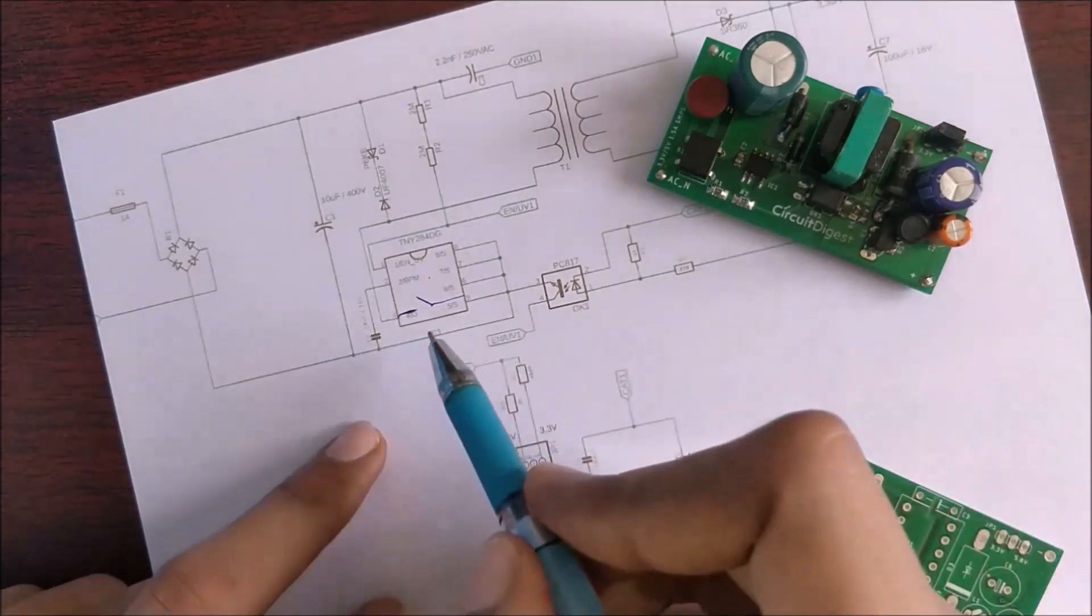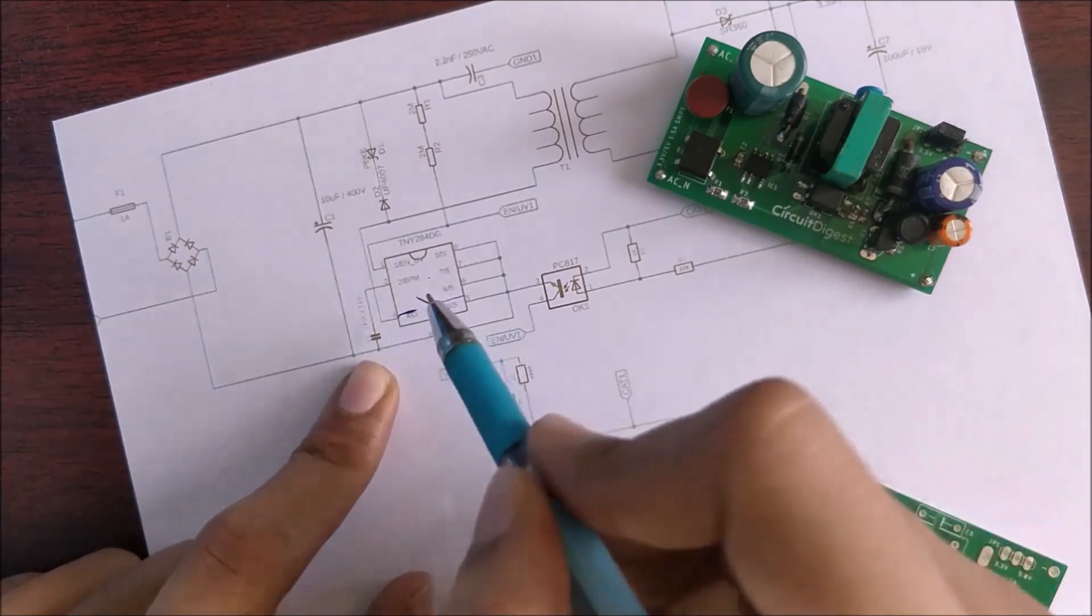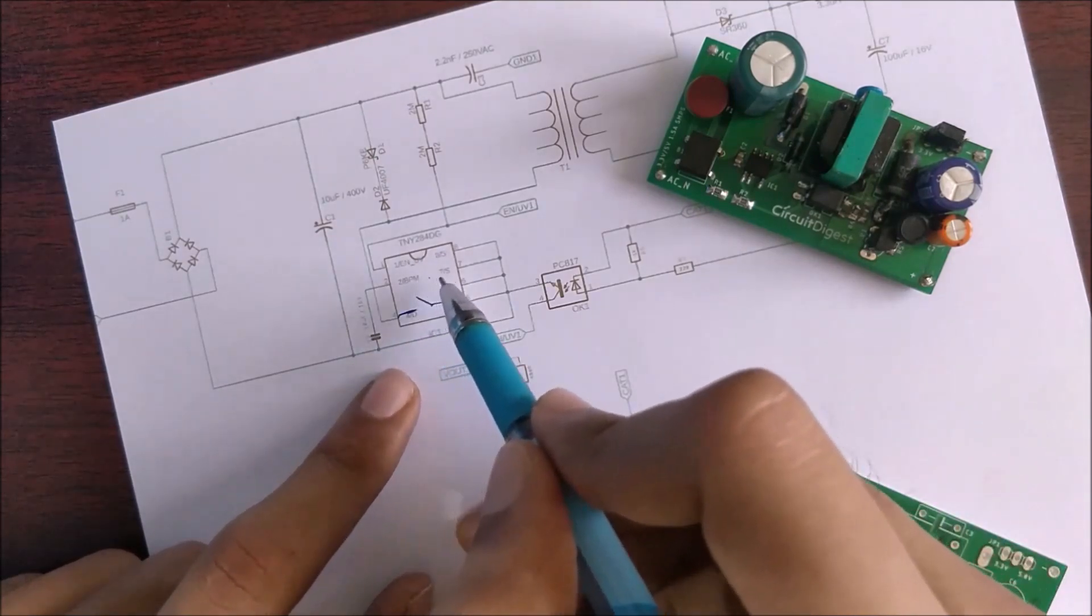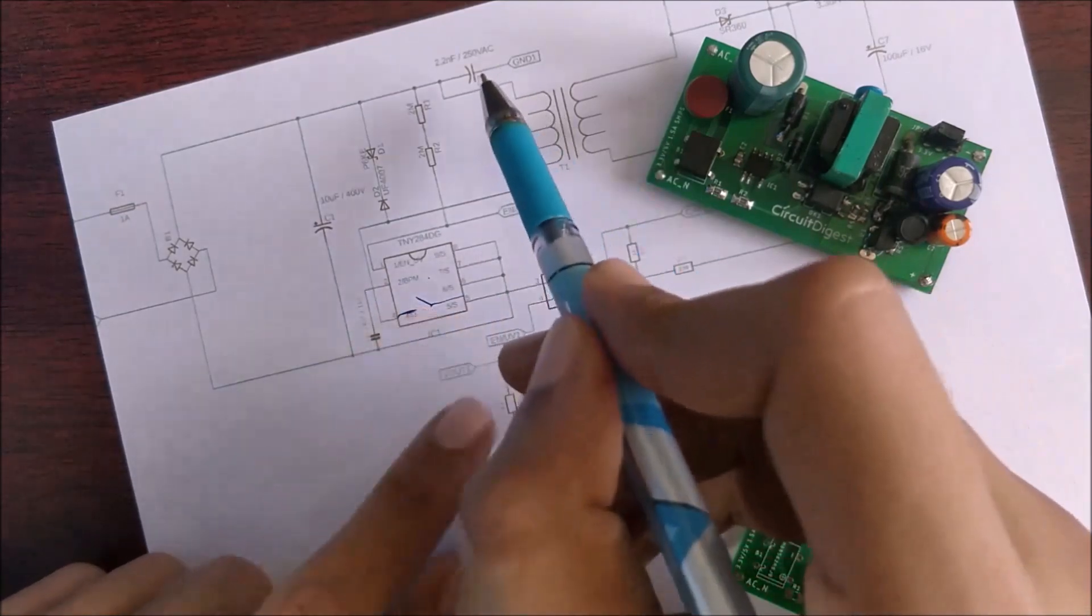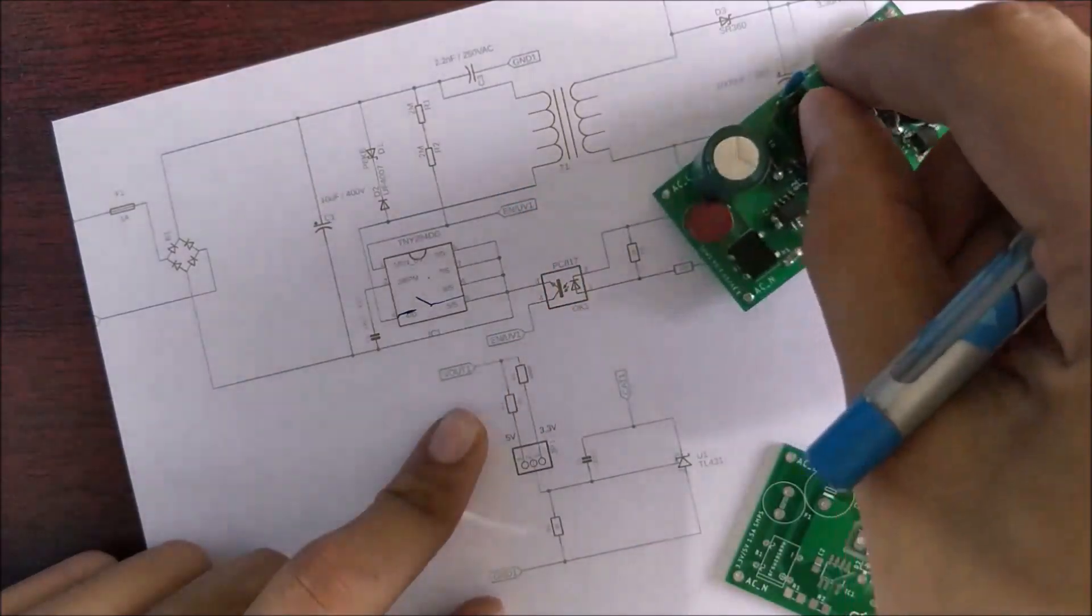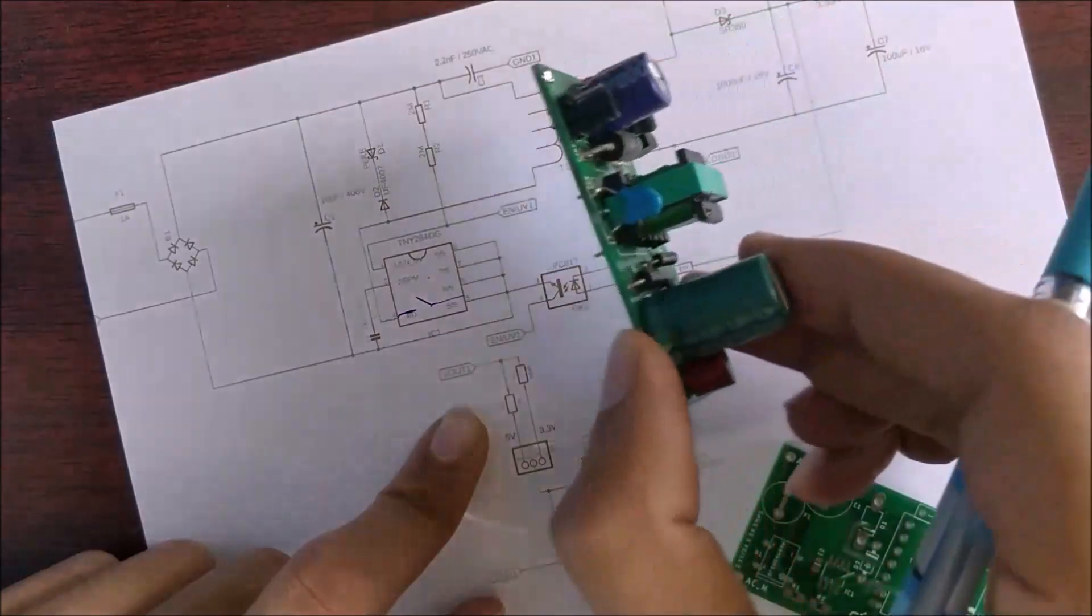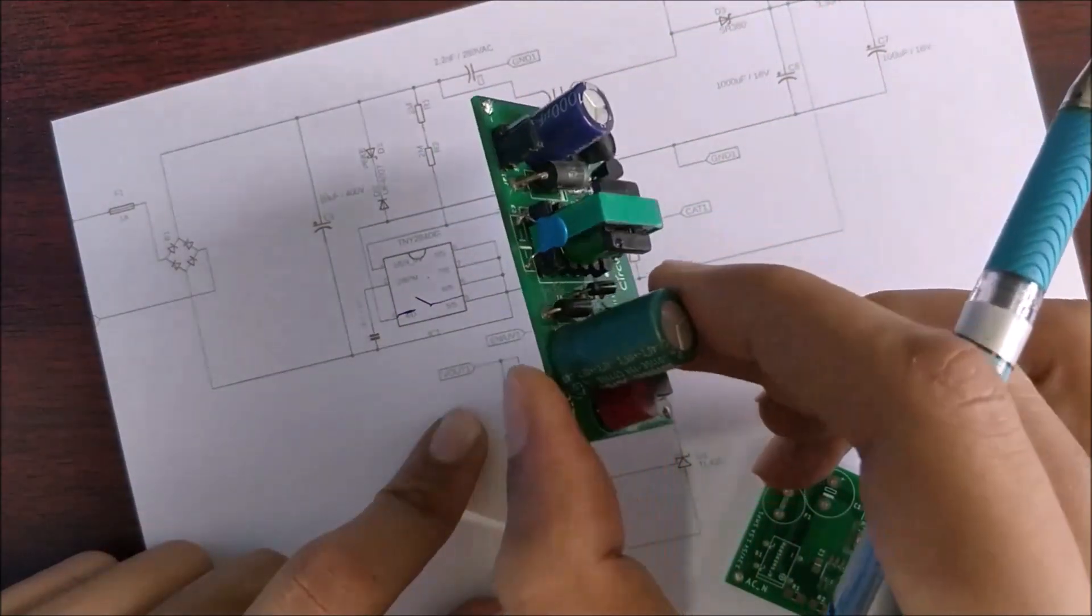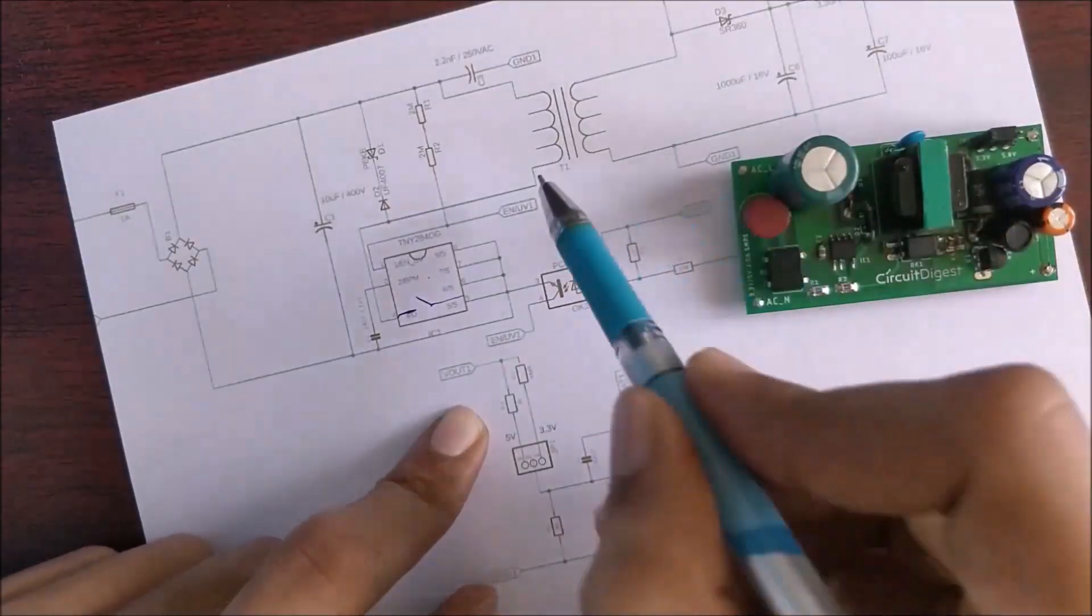Now there are two more components which I have not explained. One is a DC filter capacitor which is used to provide a smooth DC voltage for operating our SMPS controller IC and another capacitor over here is a Y class capacitor. This is a Y class capacitor which will be used to filter all the EMI noise during when the transformer is getting switched.